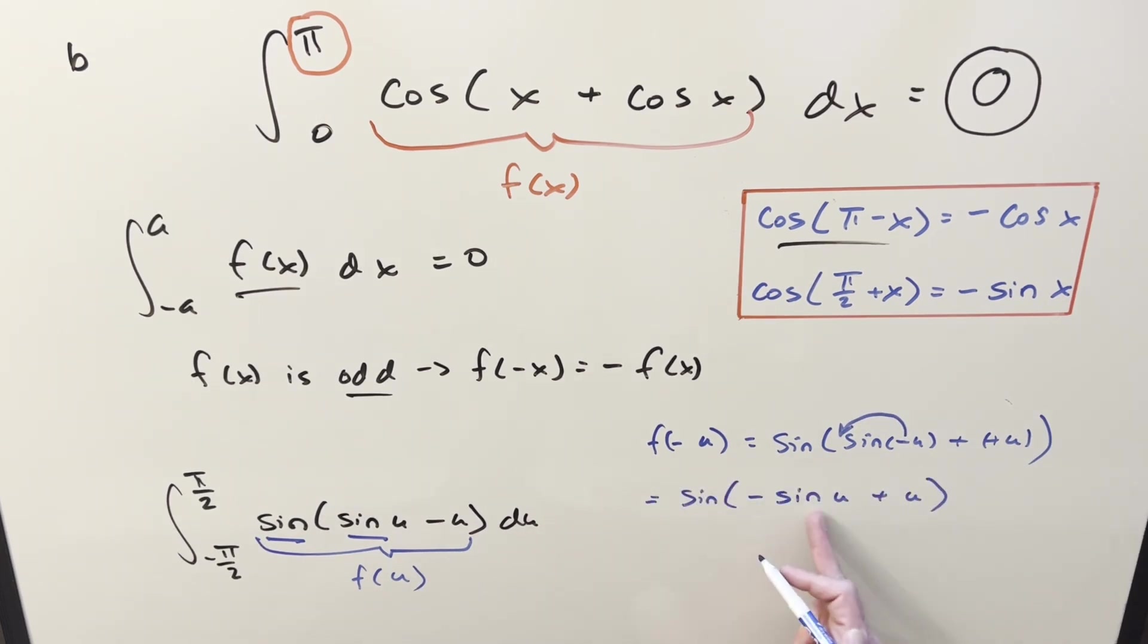But then here we can factor a minus out and bring it out front because again, sine is an odd function. So we can write it like minus sine of sine u minus u. But this again is our f of u. So what we get back is minus f of u just telling us that this thing here is an odd function. And so this check works. We can use our principle of odd functions here and say again that our solution to this is just zero.